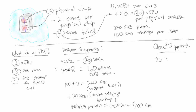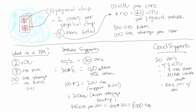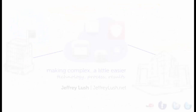Let's review. We've defined some key attributes for this cloud solution: it will support 20 virtual machines configured with two virtual CPUs per VM, 8 gigabytes of RAM per VM, and 100 gigabytes of usable RAID 10 disk with disk-to-disk backup included. To do this, we needed to define how many physical chips and cores there are, how many virtual CPUs per core, and what the virtual machine configuration is.